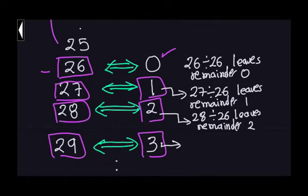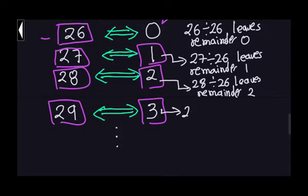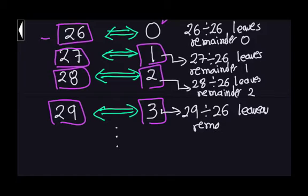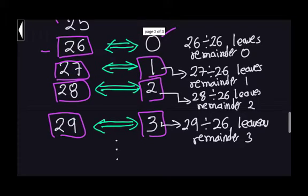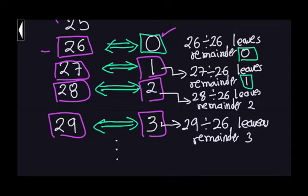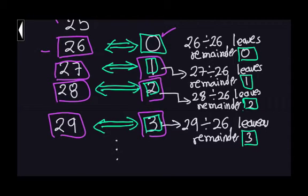The pattern continues: 29 divided by 26 leaves remainder 3. So 0 corresponds to this 0 here, 1 corresponds to this 1 here, 2 corresponds to this 2 here, and 3 corresponds to this 3 here. Every time I want to know how many positions clockwise to move, it is equivalent to looking at the remainder.